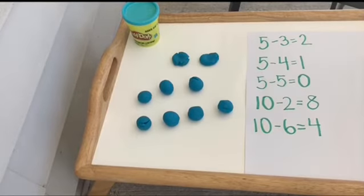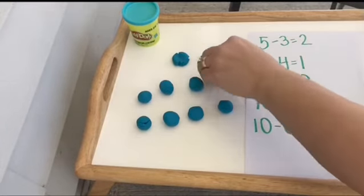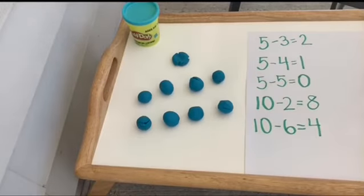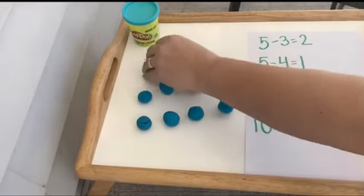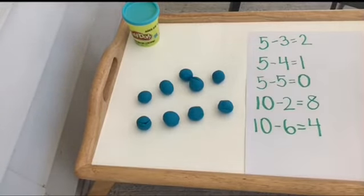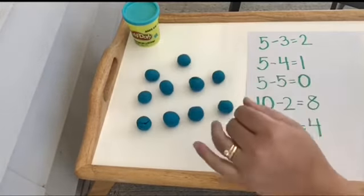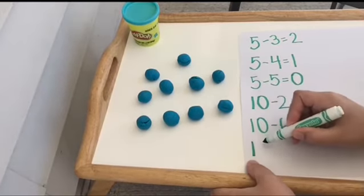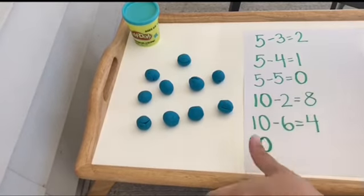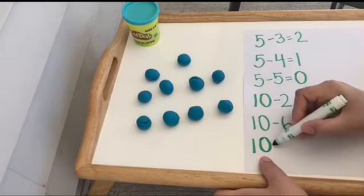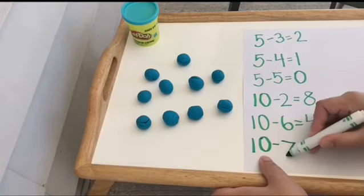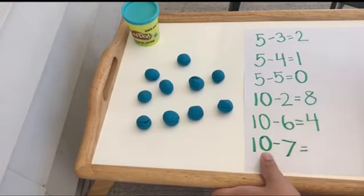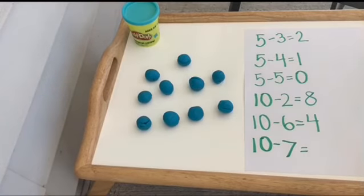And I think we will take away 7 this time. I like doing the smashing. I got some new Play-Doh so it's nice and smushy feeling. All right, so I'm starting with 10. And now I'm going to take away 7. I'm going to split that 10 into 7 and whatever's left.